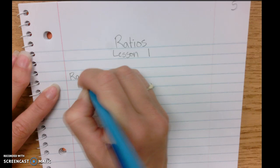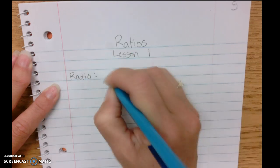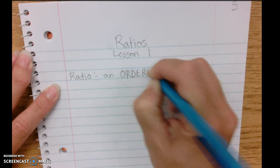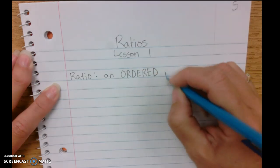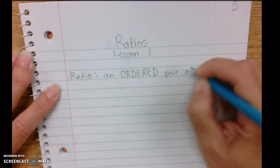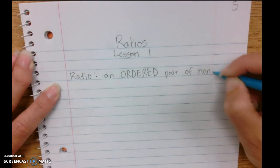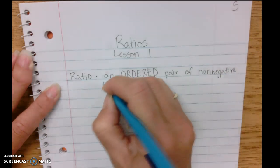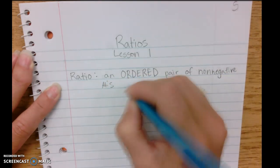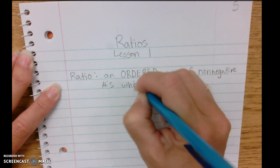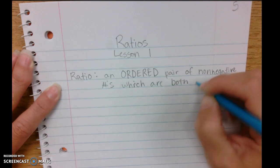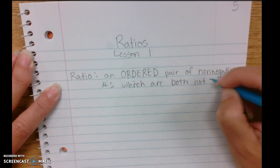A ratio is an ordered pair of non-negative numbers, which just means positive numbers, which are both not zero.